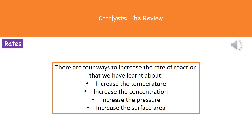Welcome to our review on catalysts. What we've done up until this point is we've looked at the different ways that we can actually increase the rate of a chemical reaction. We've looked at four different ways: we can increase the temperature, we can increase the concentration, increase the pressure if we're talking about gases, or we can increase the surface area. Those are the four ways we've looked at over the past few lessons.